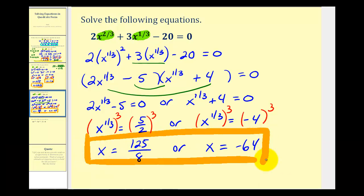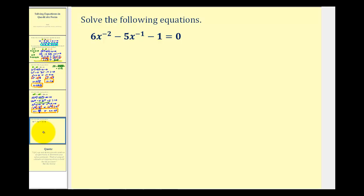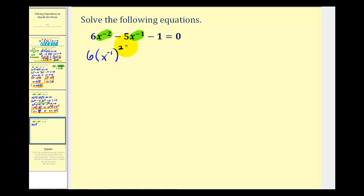Let's look at one more example. Notice this one has negative exponents. We follow the same procedure and first check if it fits the form of a factorable quadratic. If we square x to the negative one, we get x to the negative two, so if we write six times x to the negative one, squared, it equals x to the negative two — it fits the correct form.